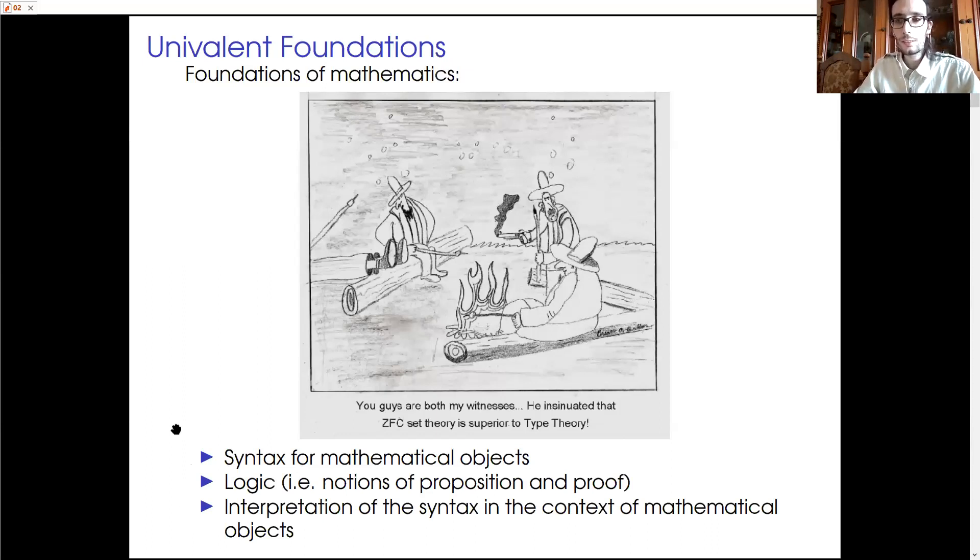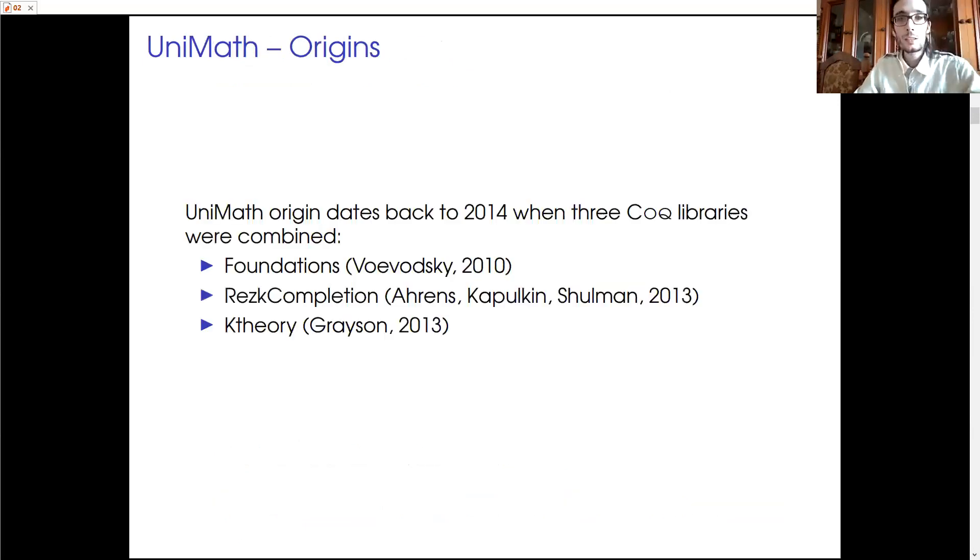So if you agree that this is a philosophically safe starting point, I will say now a few words on UniMath. UniMath has been the first Coq library for univalent mathematics and now it is developed by several contributors around the world. But its origins are in these three libraries: foundations, algebra and K-theory.